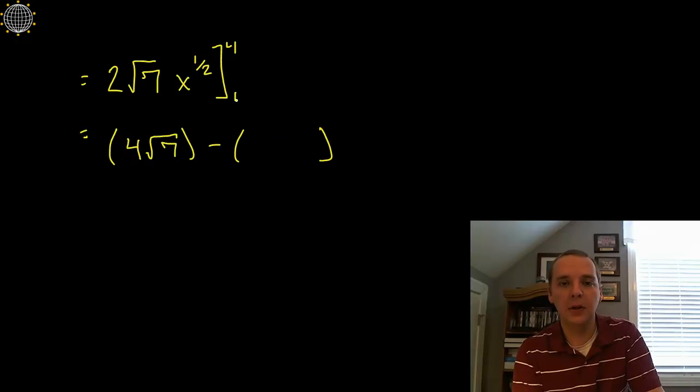If you plug in a one, the square root of one is one. One times two root seven is two root seven. Four root seven minus two root seven would be two root seven.